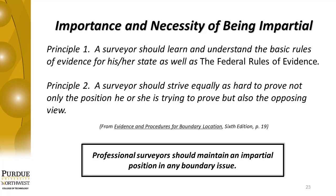Principle 2 says a surveyor should strive equally as hard to prove not only the position he or she is trying to prove, but also the opposing view. Impartiality is a key factor and an absolute for a professional surveying expert. Until the mid-1950s, there were no guidelines as to the uses and presentations of evidence to and in the courts. Congress initiated a study for the federal courts, and the resultant document was the federal rules of evidence that became applicable to all federal courts.